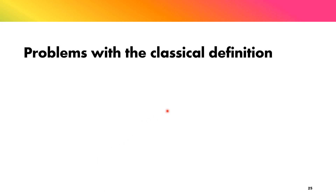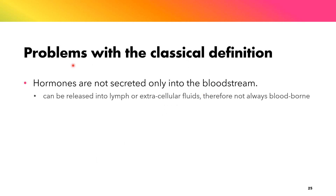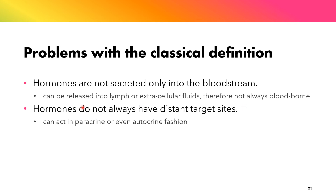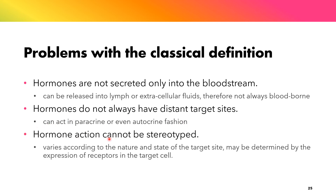Another deviation from the classical definition is that hormones are not secreted only into the bloodstream. Other hormones can be released into the lymph or extracellular fluid (ECF), and are therefore not always bloodborne. Hormones do not always have a distant target site, as some hormones can act paracrine — on nearby cells — or even autocrine, meaning a hormone can act on the cell that produced it. Hormone action cannot be stereotyped; it can vary according to the nature and state of the target site, which may be determined by the expression of receptors on the target cell.